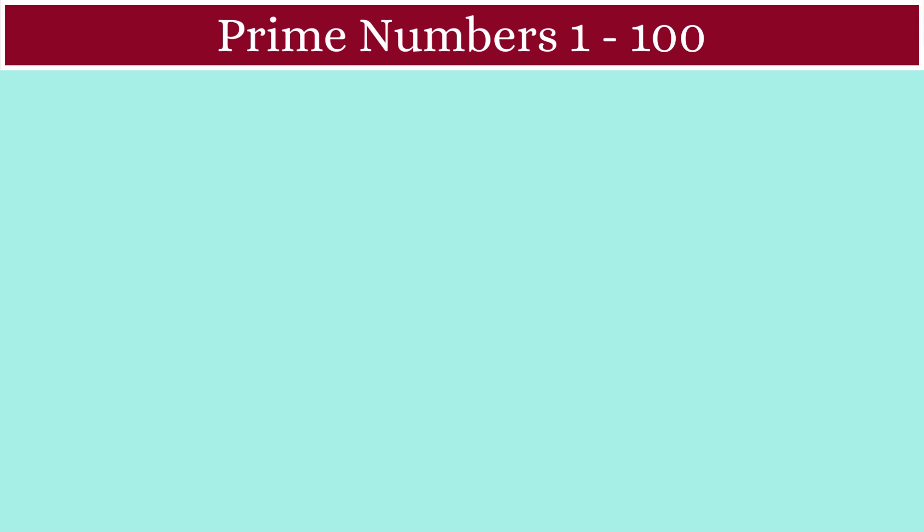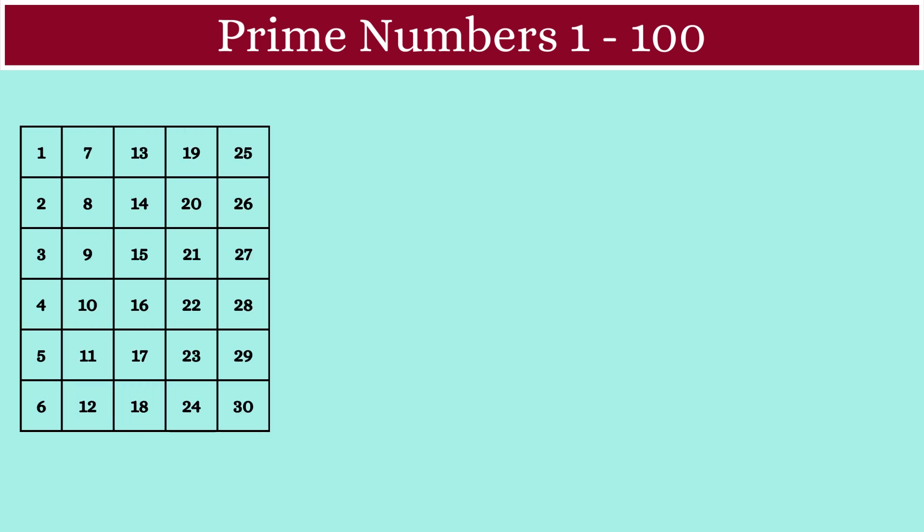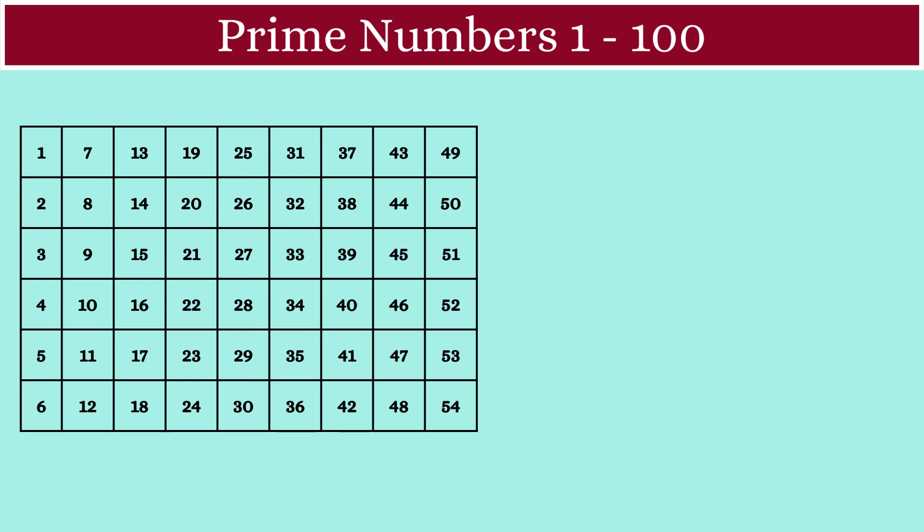Let's learn an easy method to find out all the prime numbers from 1 to 100. First, we'll list down all the numbers, but we'll do it in a special way. Let's first write 1 to 6. Then, we'll continue writing the remaining numbers like this.